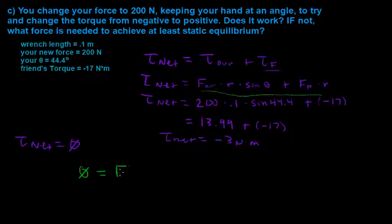And we can do that just by writing out our force that we want to find times 0.1, which is the length of our wrench, times, and then we're still keeping the same angle that we've had, so 44.4 degrees, plus our friend's torque still unchanged from negative 17.